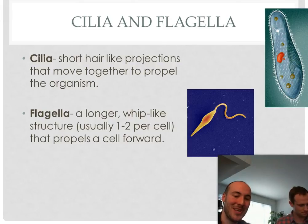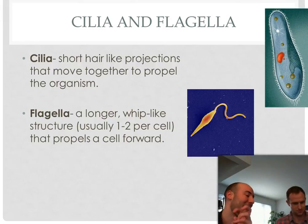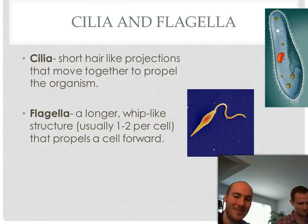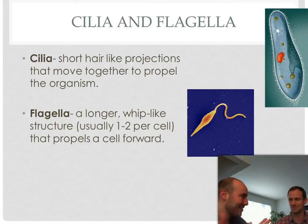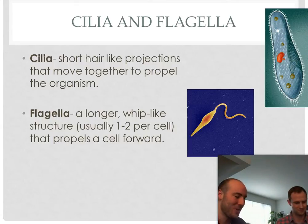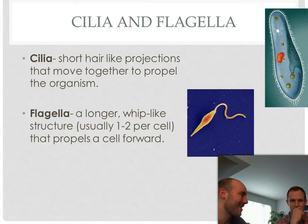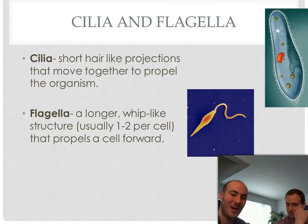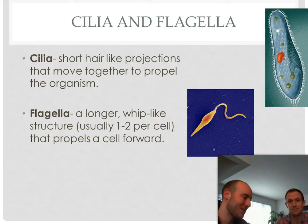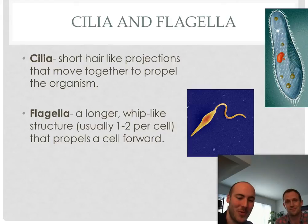Some other traits seen in what we used to call animal-like protists are cilia — little hair-like structures on the outside that work like a bunch of little propellers all working together. A flagella, by contrast, is one really long structure that waves back and forth and pushes the organism forward.